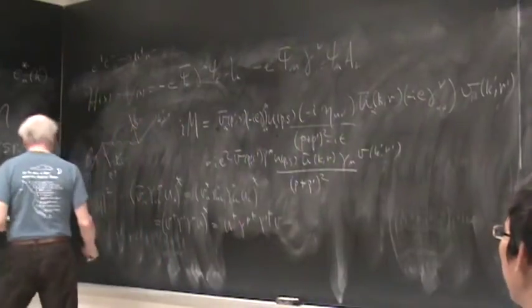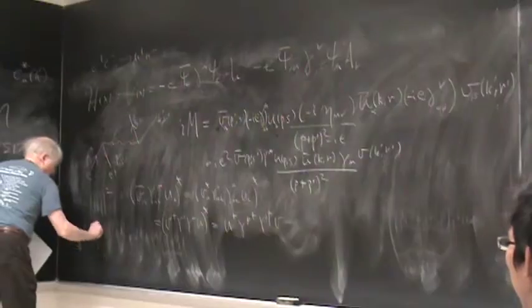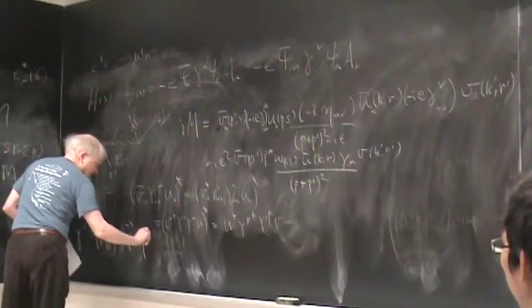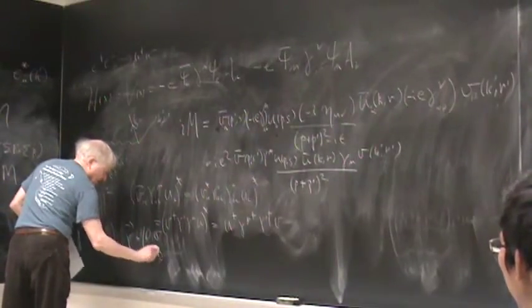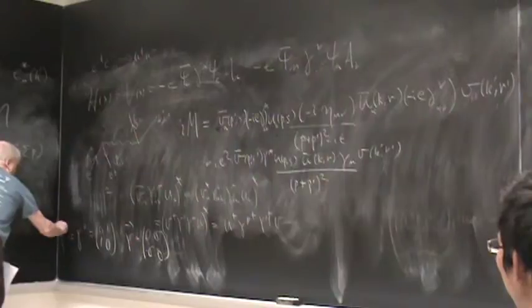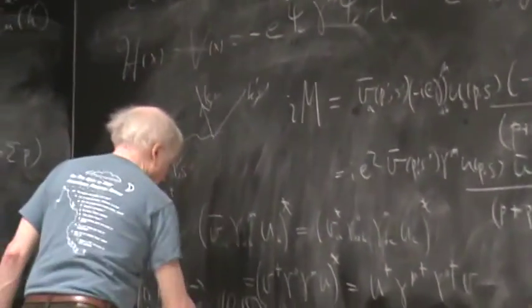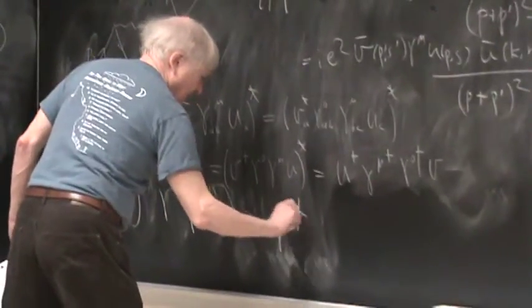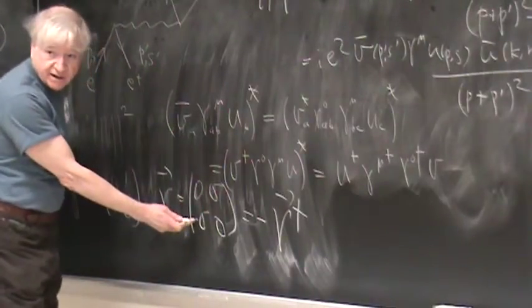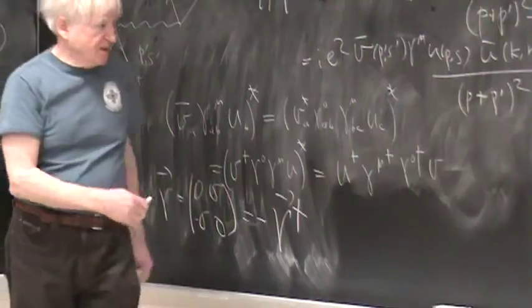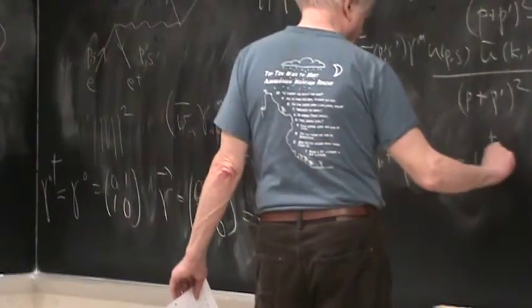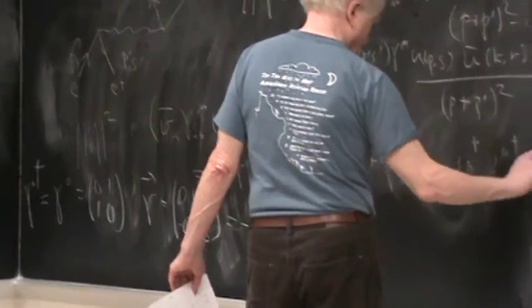So this is u† (γ^μ)† (γ⁰)† v in matrix notation. Now γ⁰ is 0 1, 1 0 and γ vector is 0 σ, minus σ 0. So γ⁰ is equal to γ⁰ dagger actually. But γ is minus γ dagger actually because the σ's are Hermitian but there's a minus sign here when they transpose.